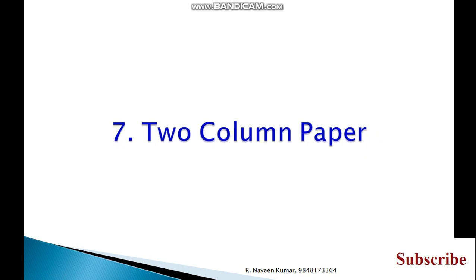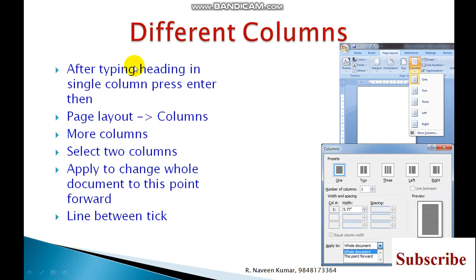In MS Word, how to make a two column paper with different columns. Under Page Layout you have the Columns option, and it has More Columns. Don't directly click two columns here — go to More Columns. The 'Apply to' command is very important. We are not applying two columns for the whole document in some cases. 'This point forward' is very essential to change columns from one to another.